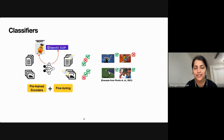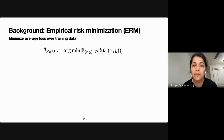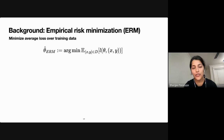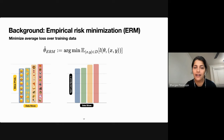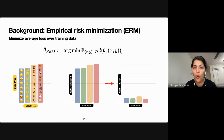Models like classifiers are typically trained with empirical risk minimization, which reduces the average training loss. ERM assumes that data is unbiased — the different slices of data are assumed to be identically distributed in both training and test data. As a result, their average test losses start nearly equal, and over the course of training, the loss over all data slices decreases almost identically.